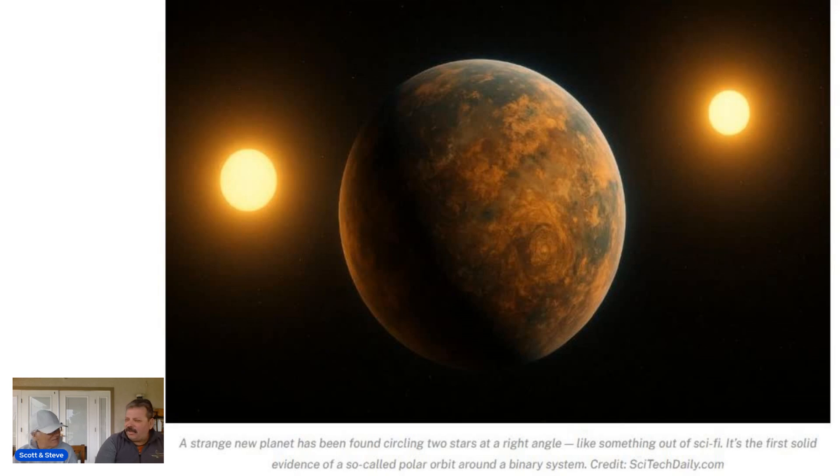Yeah, so this picture, those aren't two moons. Those are two suns way off in the distance, and that's a planet right there. And this planet is at a 90-degree angle to those suns. This is only the second instance that that's been found in our universe.